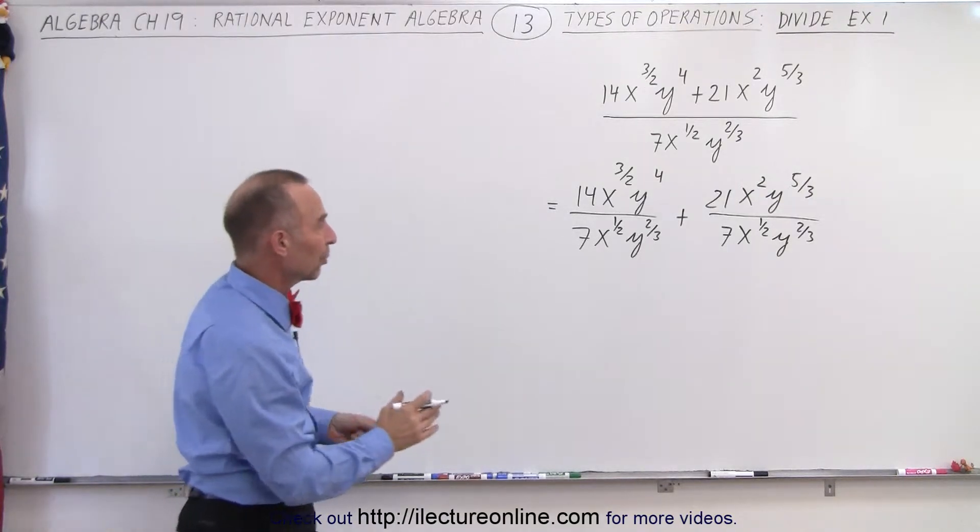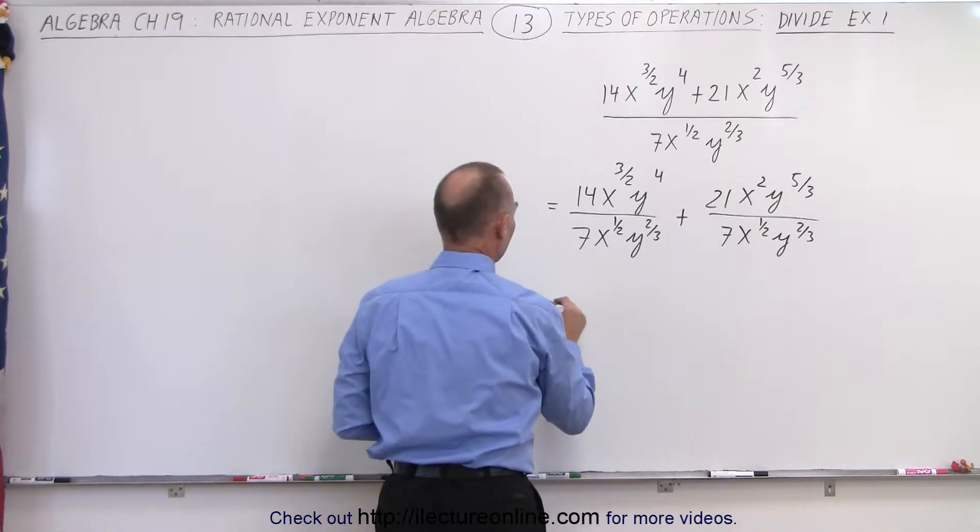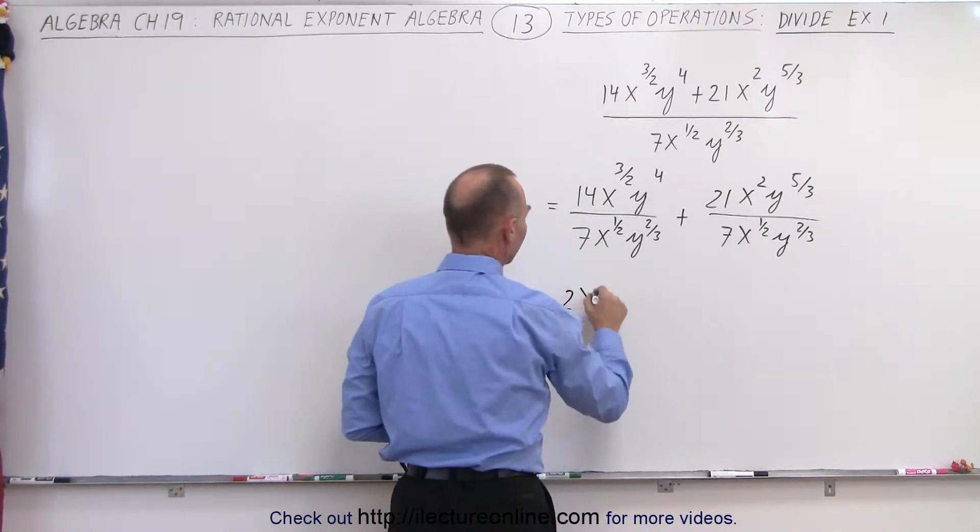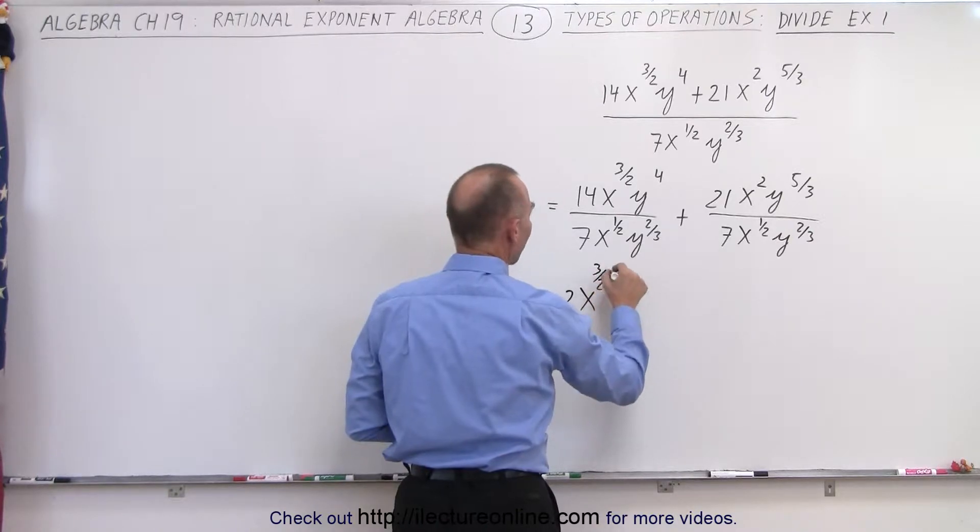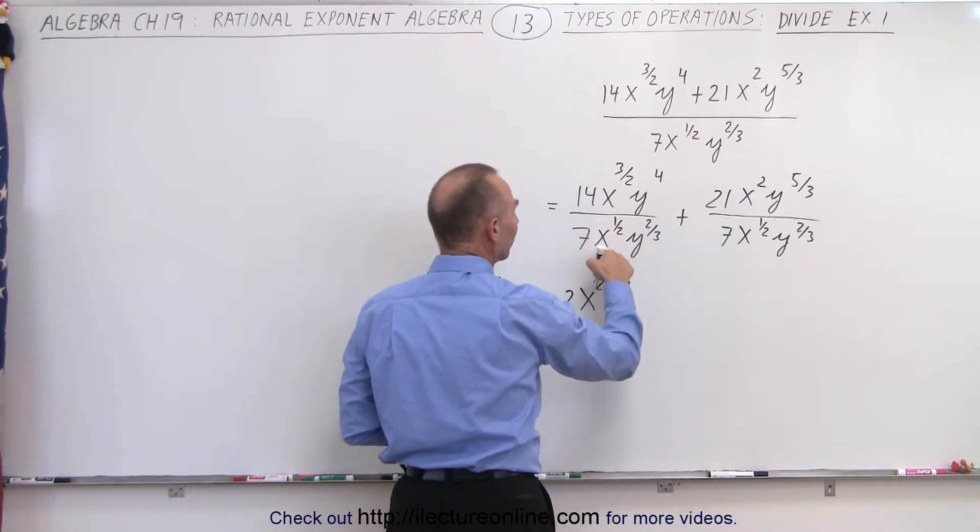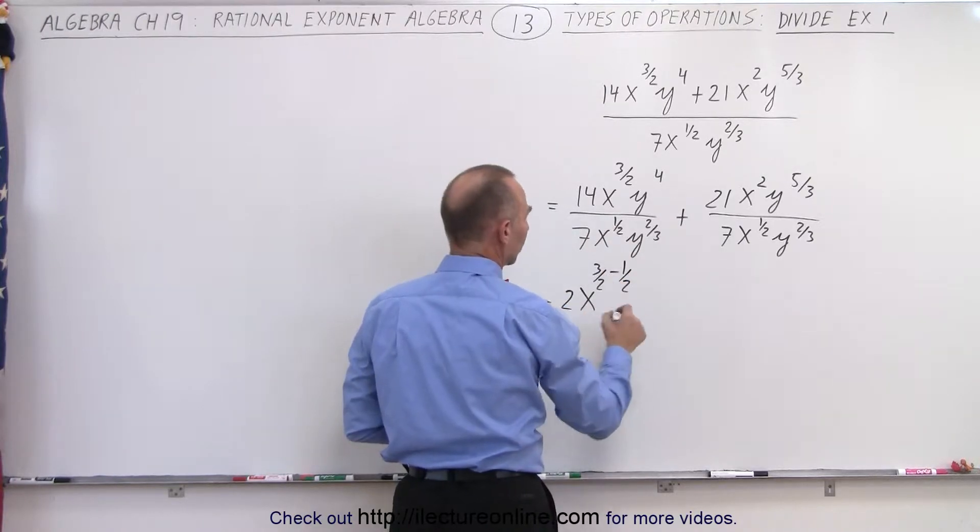All right, next we're going to take a look at each of these fractions separately. First of all, we have 14 divided by 7, which is 2. We have x^(3/2) minus 1/2. Remember, when you divide and the bases are the same, you subtract exponents.